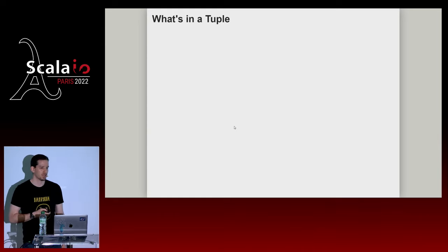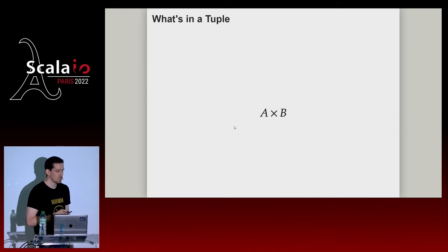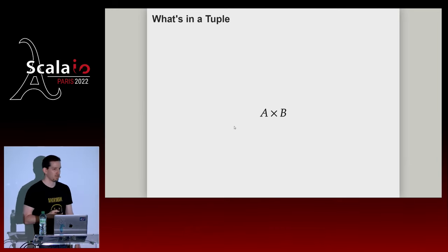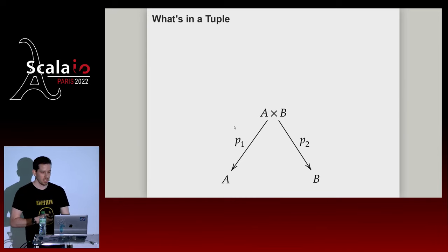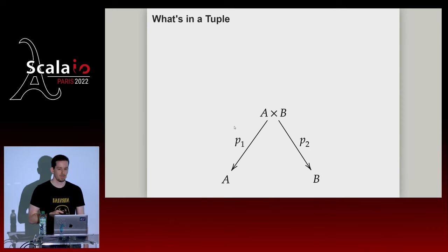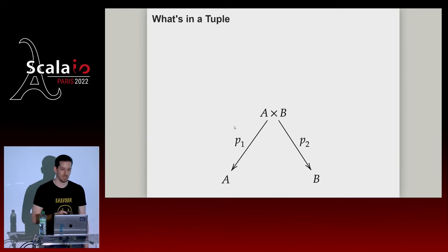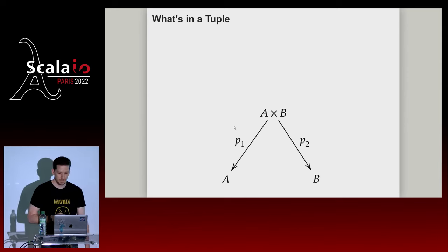Now let's take a programming concept and convert it into the language of category theory — converting something we know from programming into the language of objects and morphisms. We'll start with tuples. Tuples are a very simple construct; it's just a pair of two types. Mathematicians call it a product type with a little X symbol, written as A times B. Since category theory is about relationships, the first question is: how does a tuple relate to anything else?